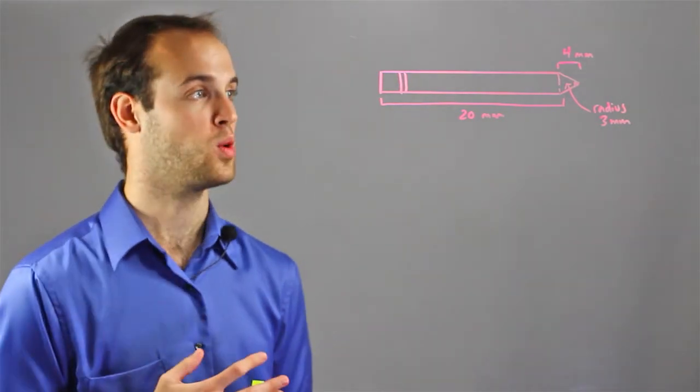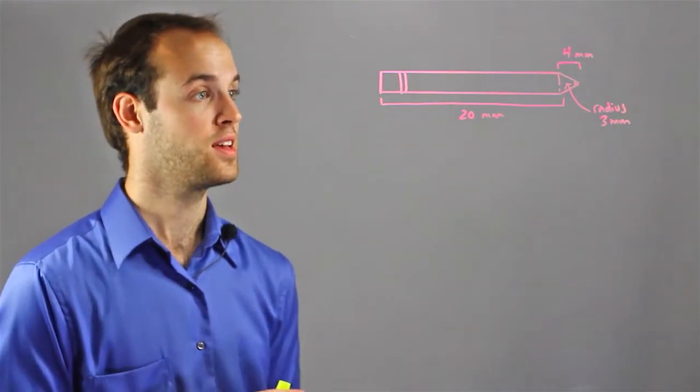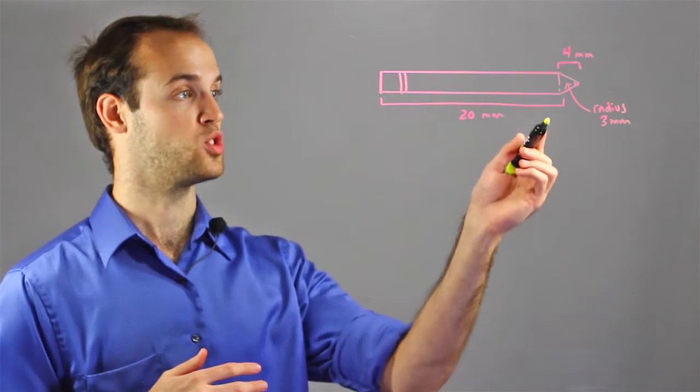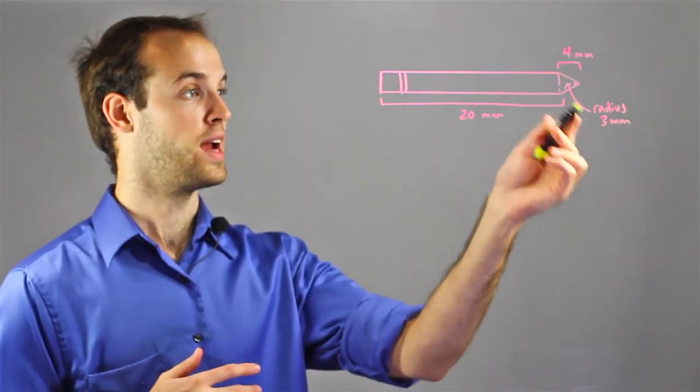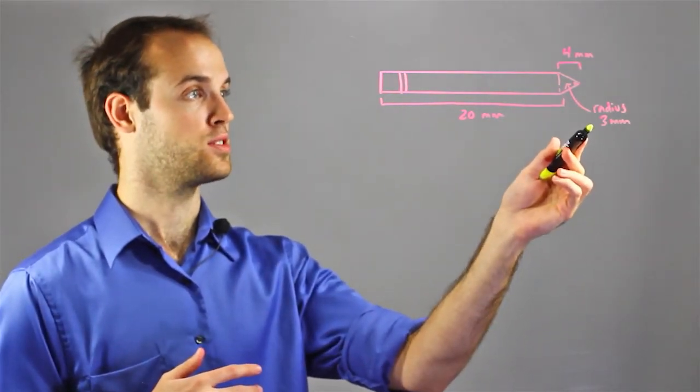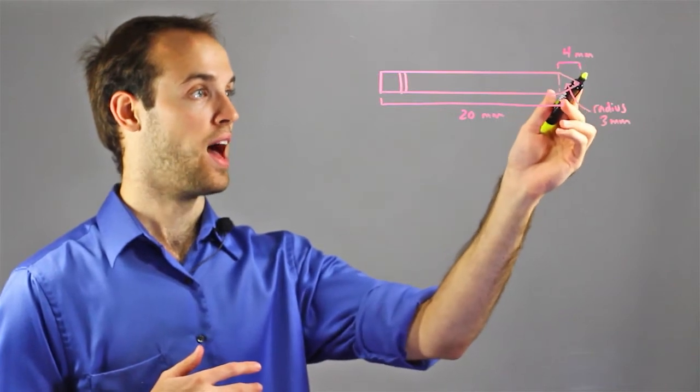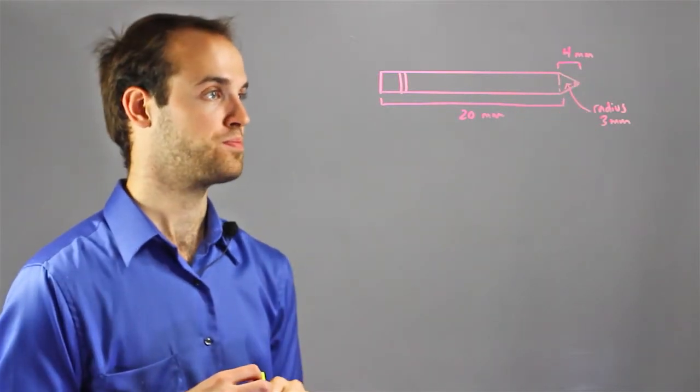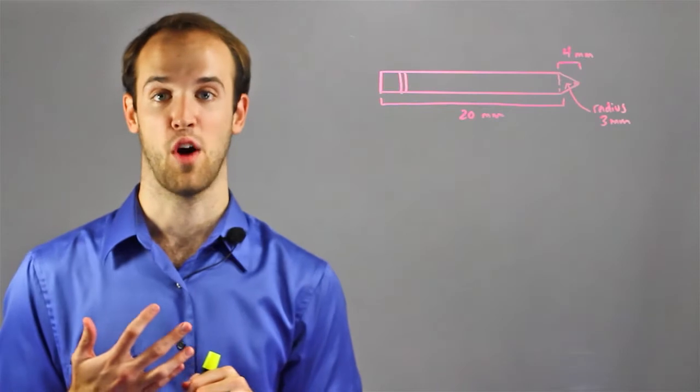For example, let's say I'm told to find the volume of this pencil, and I know that the shaft length is 20mm, the radius is 3mm, and the tip height is 4mm. And I want to know what the volume of that is.